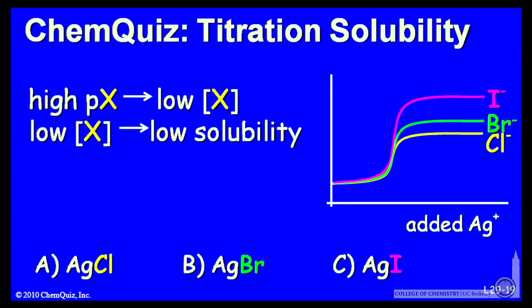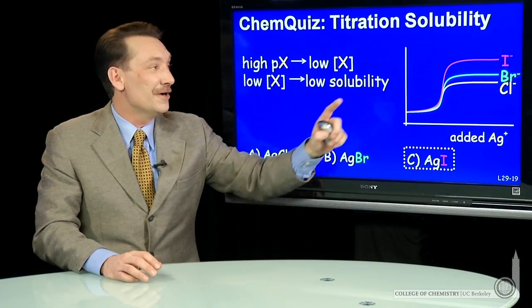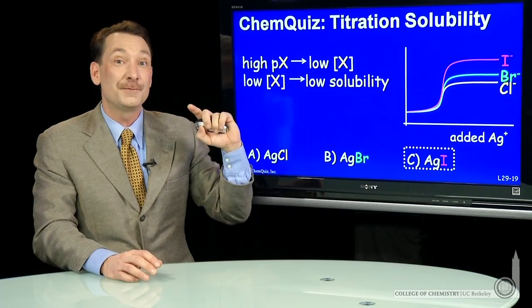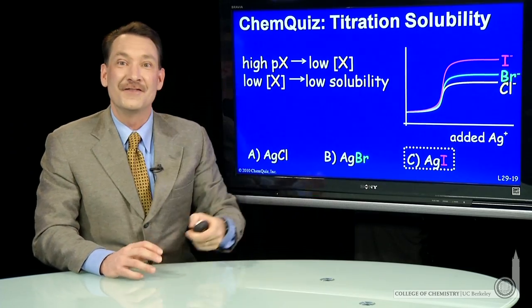It is the one that forms the most silver iodide solid of these three. Silver iodide is the answer here because iodine is the lowest concentration, the highest pX, at the end of these titrations.